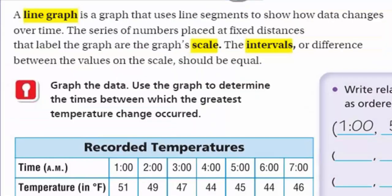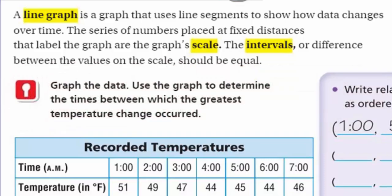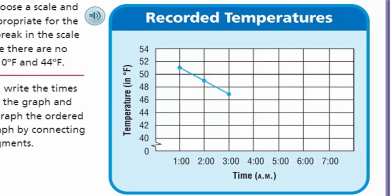A scale is a series of numbers placed at fixed distances that label the graph — starting at a certain number and going to another. The interval is the difference between values on the scale. Looking at our temperatures, we have 40, 42, 44 on the scale. The interval is the difference between those: 42 minus 40 is 2, and 44 minus 42 is 2, so our interval on the vertical axis is 2.